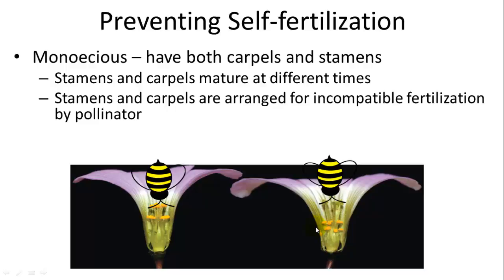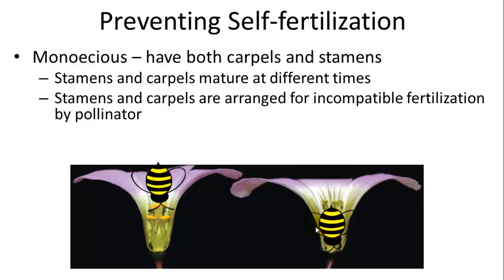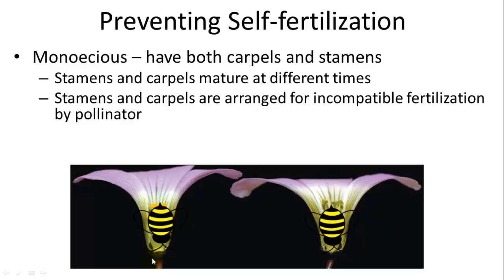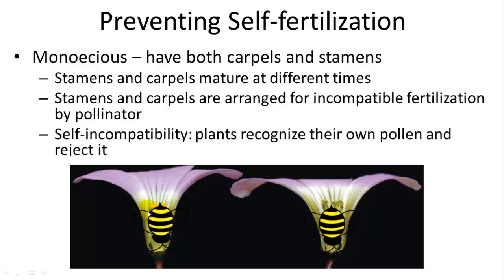They can also be arranged for incompatibility of fertilization by a pollinator — when a bee visits one flower it gets pollen in a different spot than when it visits another, preventing self-fertilization. Plants can also have chemical recognition of their own pollen so that they reject it and don't create self-fertilization.